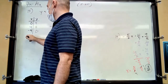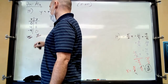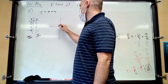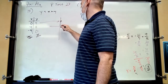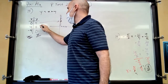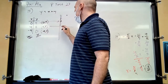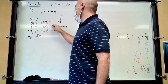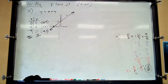Now graph the points. Remember: x is left or right, y is up or down. Plot (0, 4), (4, 8), and (−4, 0). Go zero left or right, then up four; go four right, up eight; go four left, zero up. Connect the dots — that's what the line looks like.